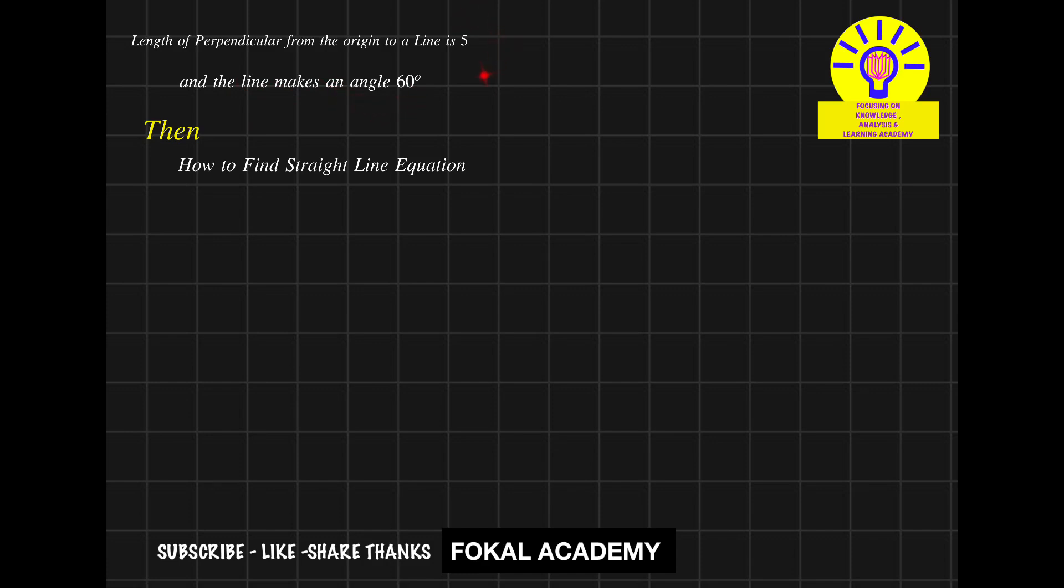So by reading this data we can say that it is in the normal form. So we know that what is the normal form equation. So this is y-axis and this is x-axis. So this is the required line equation.